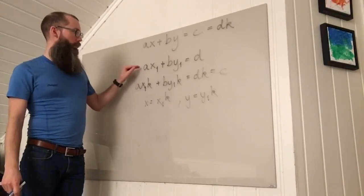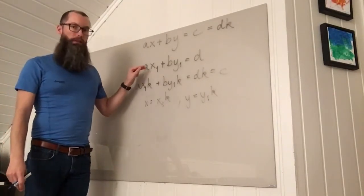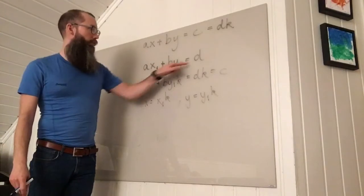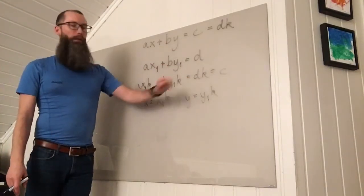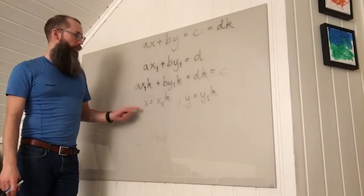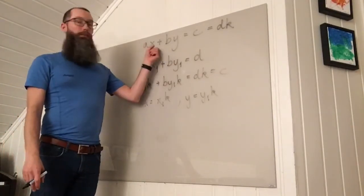We simply first use the extended Euclidean algorithm to solve this equation, finding X1 and Y1. Then we scale up by the required K to find a particular solution of the original equation.